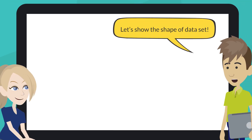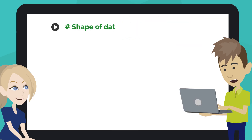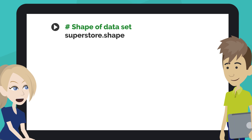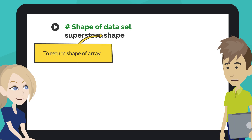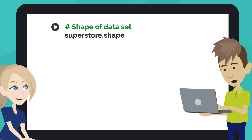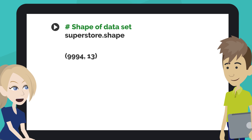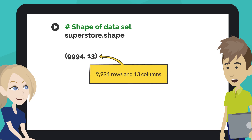Then let's show the shape of the dataset. Type the code like this into the next code cell of your notebook. The NumPy shape function returns the shape of an array. Click on the play button or hit Shift + Enter. This output means there are 9,994 rows, including the header, and 13 columns.